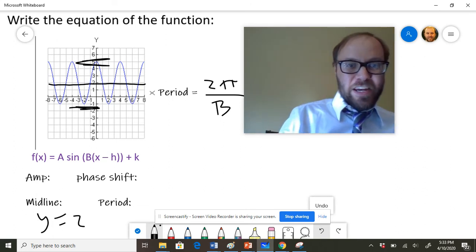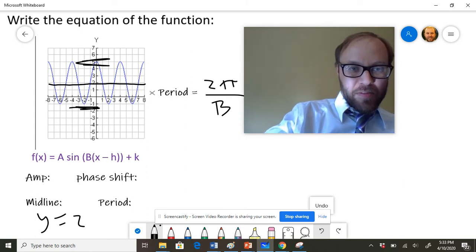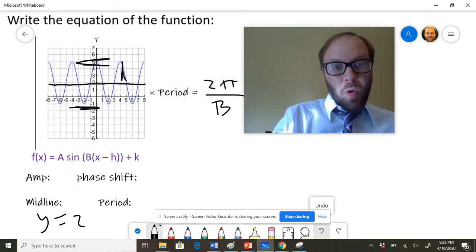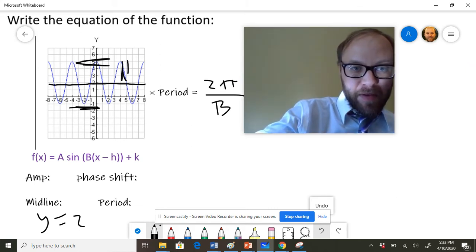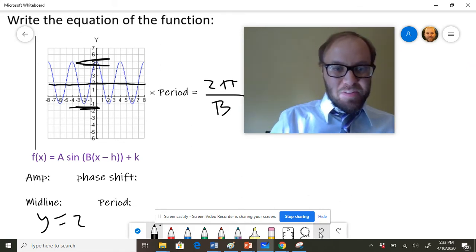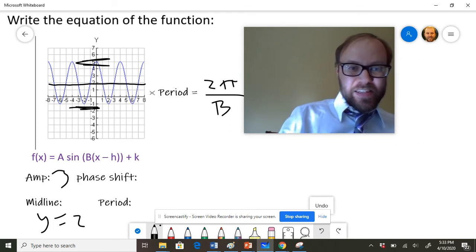You should be able to count the amplitude now. Notice that it goes from two up to five, so that amplitude is three. Or you could just look at the whole graph from top to bottom. The height of the whole thing is six. You could just take half of that, and that would tell you that the amplitude is three. So a few different ways to handle that.